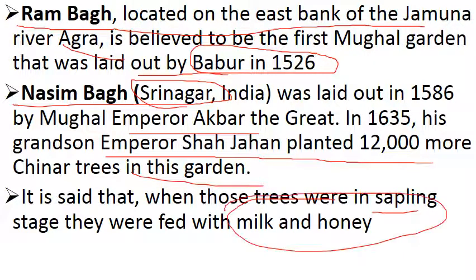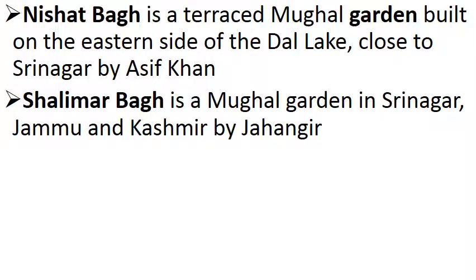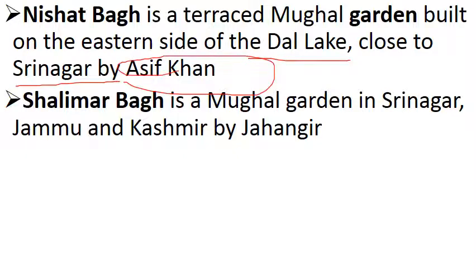Then comes Nassim Bagh. It is on the river bank of Dal Lake and is also in Srinagar, Jammu and Kashmir. It was built by Ashif Khan. Then comes Salimar Bagh — it is in Srinagar also, and it was built by Jahangir.